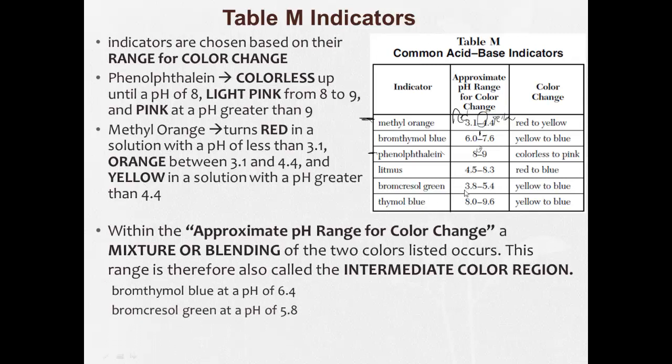Bromcresol green at a pH of 5.8. Here, let's say bromcresol green at a pH of 5.0, you'd have blending. Phenolphthalein at, let's say, 8.2, you'd have blending.